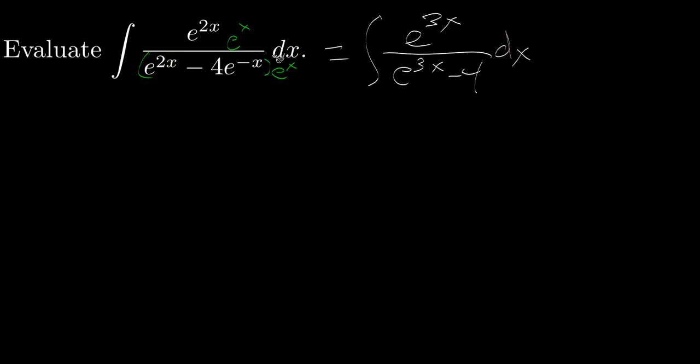Now this is much better than the original problem for two reasons. The denominator only has a single exponential. We just have e to the 3x, whereas before we had two exponentials.